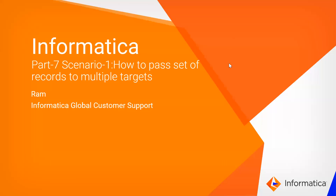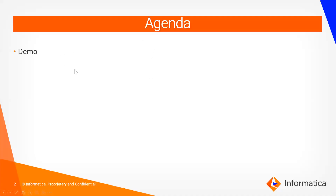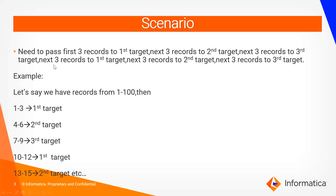Hi everyone, this is Ram from Informatica Global Customer Support team. In the previous videos we have seen a lot of transformations, so based on this let's see a simple scenario: how to pass a set of records to multiple targets. We need to pass the first three records to the first target, the next three records to the second target, and the next three records to the third target from the source. After that, the cycle repeats.